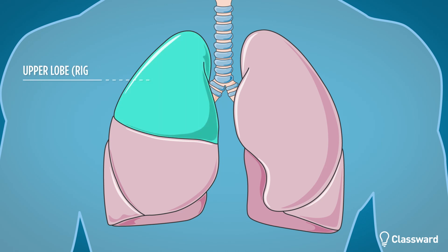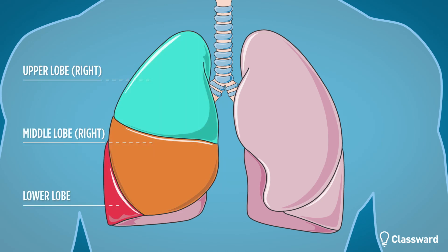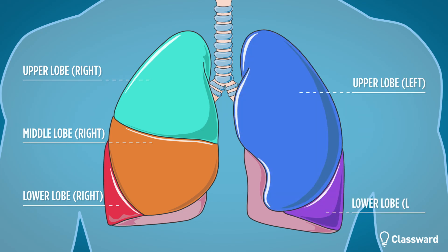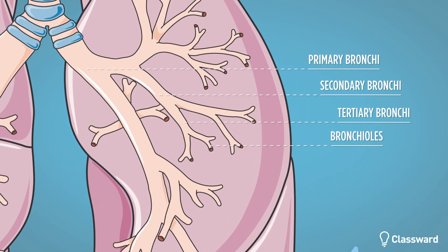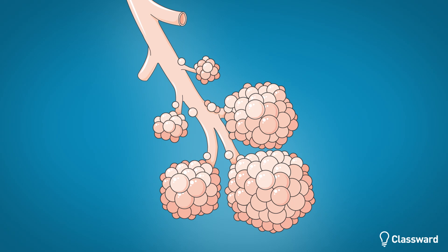In the lungs, there are three lobes on the right — the upper, middle, and lower — and on the left there are two lobes, the upper and lower. The main stem bronchi then divide into smaller and smaller bronchi before becoming even narrower as they branch off into bronchioles.